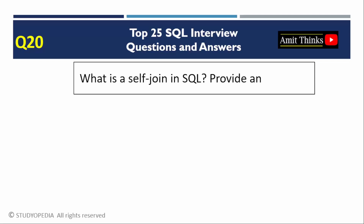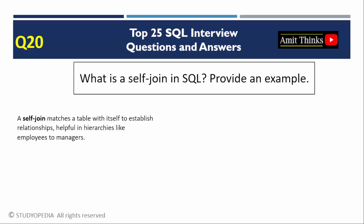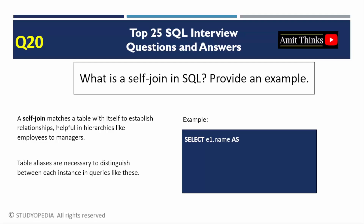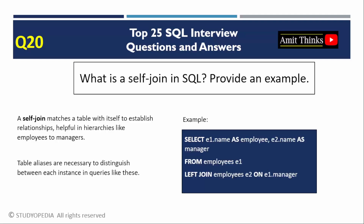Question 20: What is a self-join in SQL? A self-join joins a table to itself. A common example is employee-manager relationships. Use aliases to distinguish between instances of the same table. Here we use a LEFT JOIN on the employees table to itself. This query shows each employee along with the name of their manager using a self-join on the employees table.